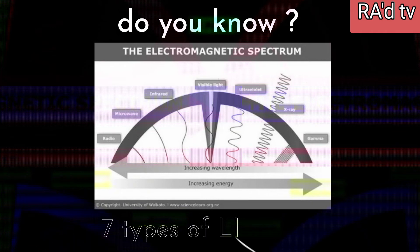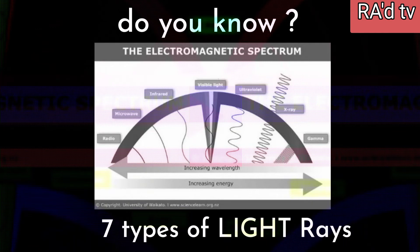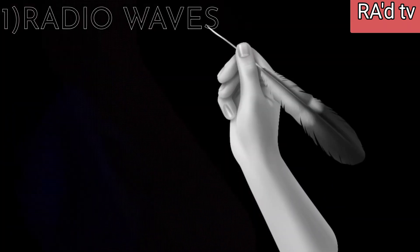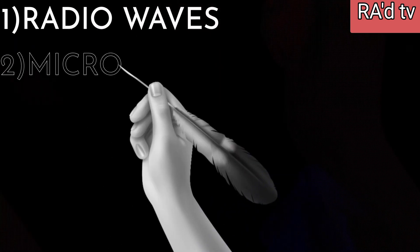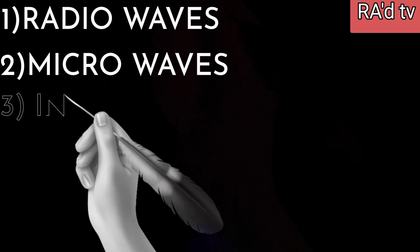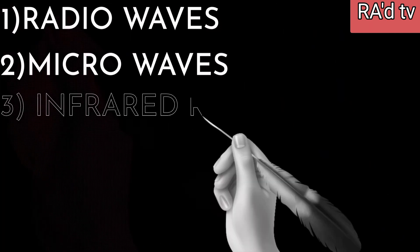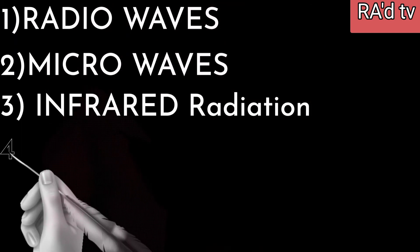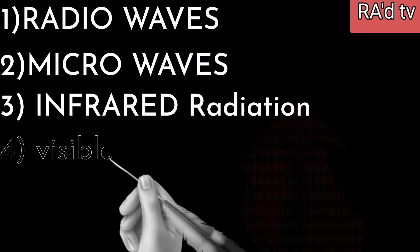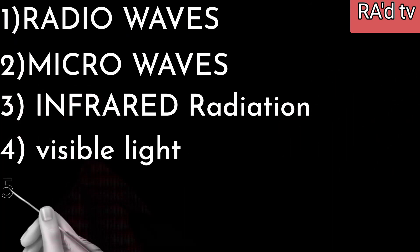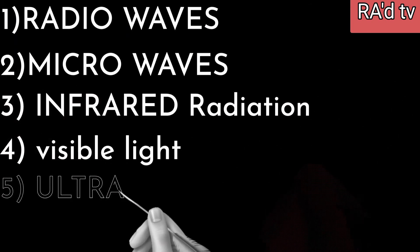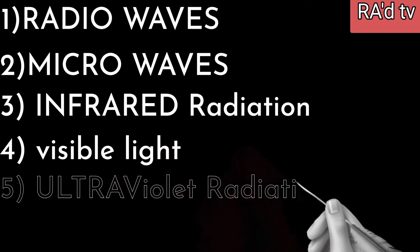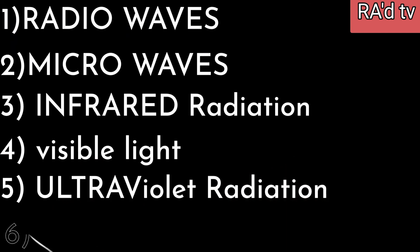Electromagnetic radiation, or simply light rays, has seven types. Radio waves are one of them. The second is microwaves. Third is infrared radiation. Fourth one is visible light. Visible light is the light which we can see with our naked eyes. Except visible light, we can't see any other types of electromagnetic radiation.